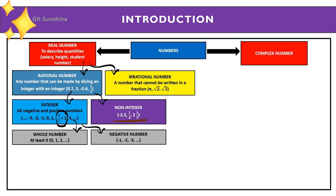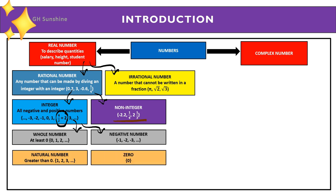Under integers, there are whole numbers and negative numbers. Whole numbers start from 0: so 0, 1, 2, and so on. Negative numbers have a negative sign. Under whole numbers, there are also natural numbers, which are all positive numbers — so 1, 2, 3 and so on.